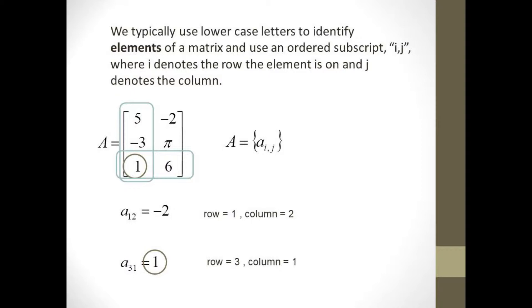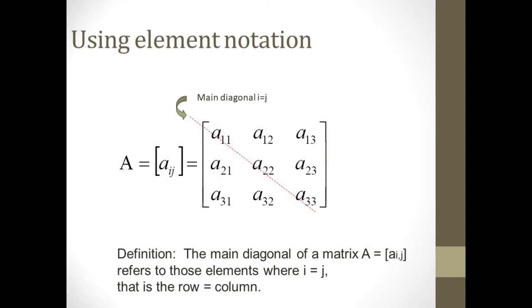Similarly, the element A sub 3, 1 is the value in row 3 and column 1, which is 1. This notation allows us to easily identify particular elements or describe behavior of elements when performing a matrix operation.